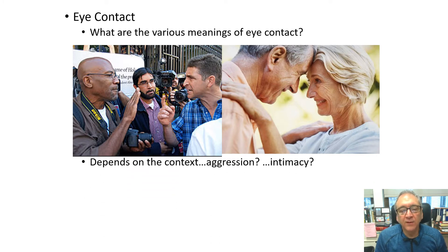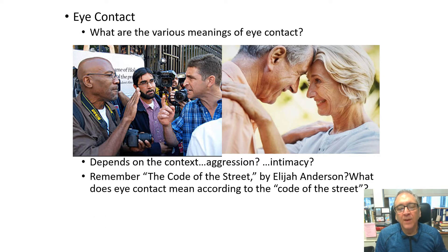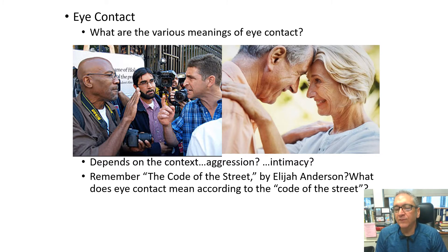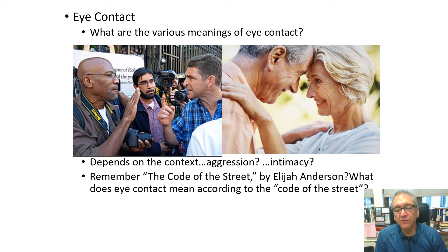It depends on context — eye contact, like everything else, depends on context. Does it mean aggression? Does it mean intimacy? You may want to remember Elijah Anderson's article 'Code of the Street' — he talks about eye contact and what it means according to what he calls the code of the street, and how important it is in the way that people define the situation they are in.